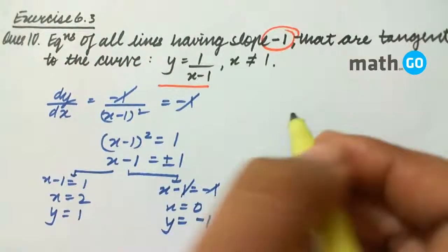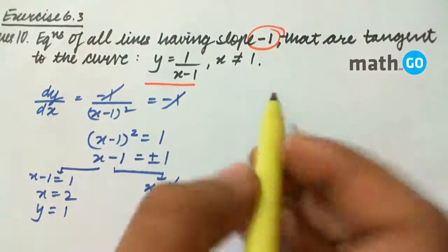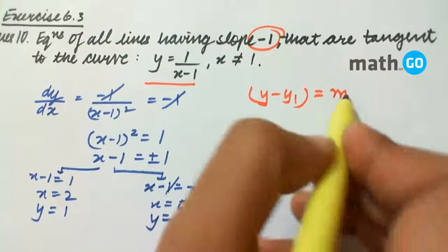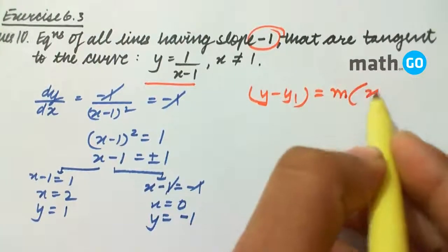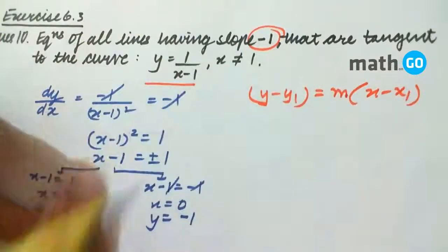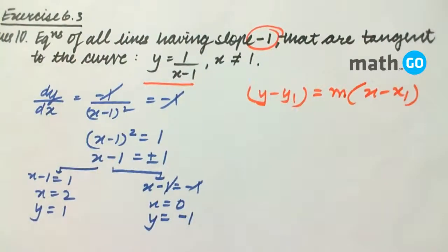The general form of the equation is y - y₁ = m(x - x₁), where (x₁, y₁) is a point and m is the slope.